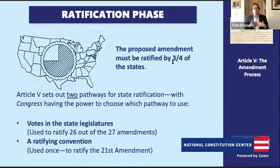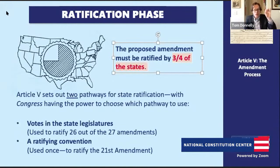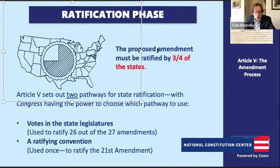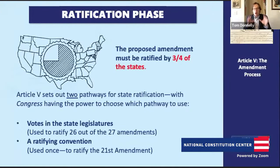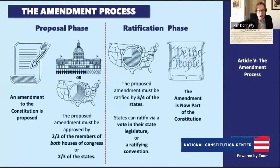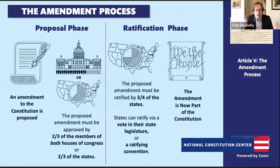Congress has a role in the ratification phase. Congress can set the mode of ratification — it could be by the state legislatures or by specially called state ratifying conventions. But once Congress sets the method of ratification, it gets out of the way and it's up to the states. To cross the finish line and get your amendment added to the Constitution, you need three-fourths of the states to approve.